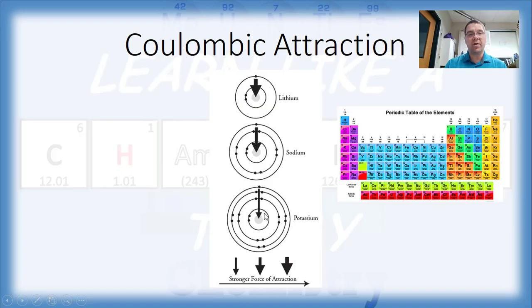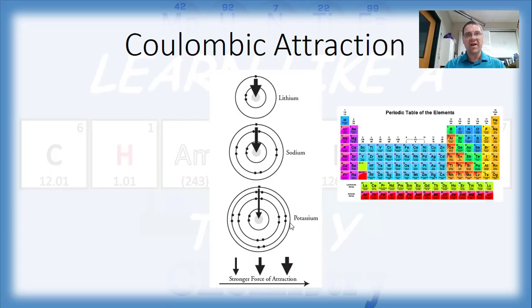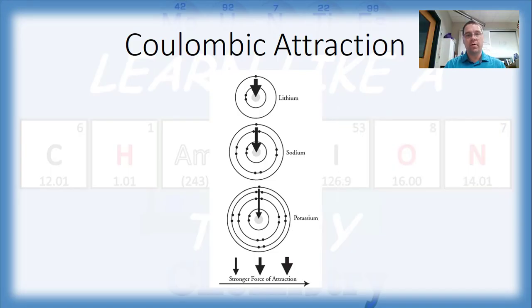Here's the point. Lithium is in period two and has two energy levels. Sodium is in period three and has three energy levels. Potassium is in period four and has four energy levels. So when you look at an element's position on the periodic table, how far down the table you are gives you a rough idea of how many energy levels are present. The more electrons there are, the more energy levels you need — and the more levels you have, the more layers there are to the atom, meaning the bigger that distance is going to be.